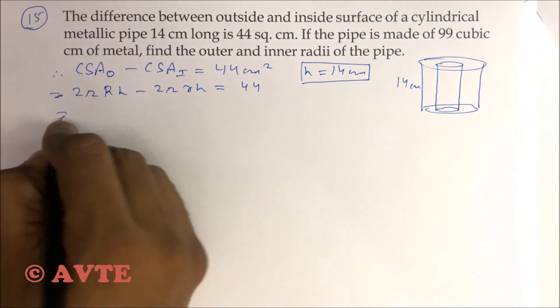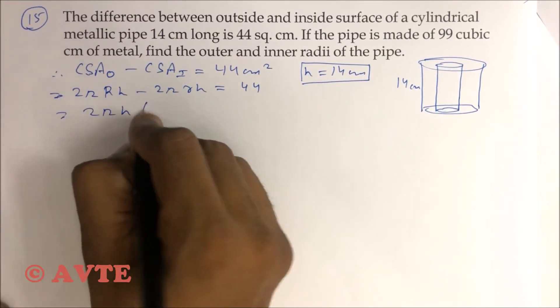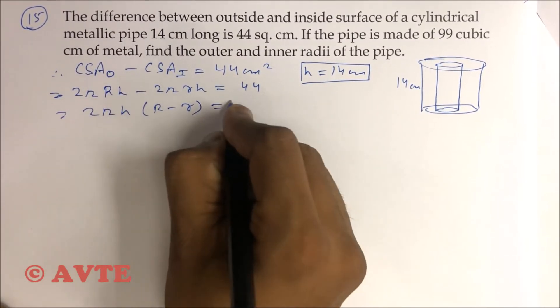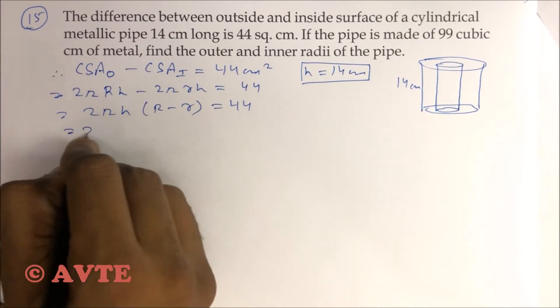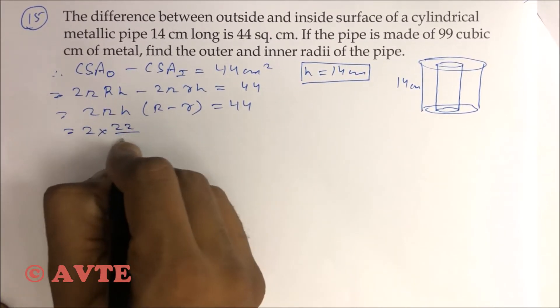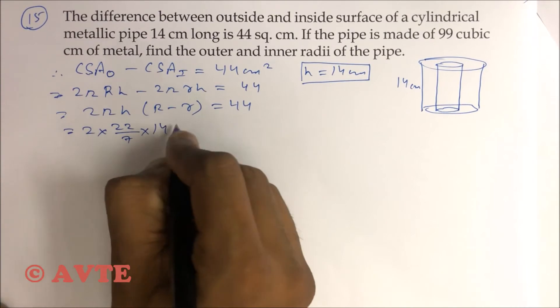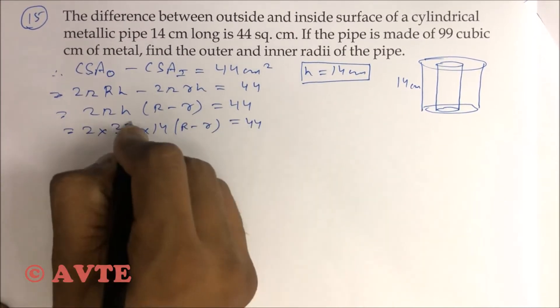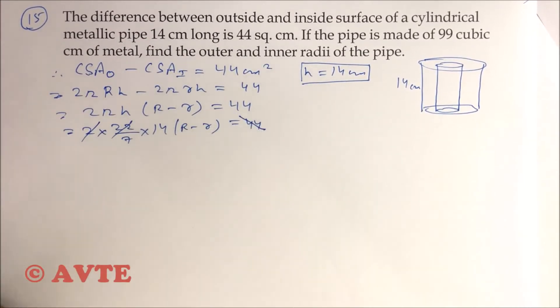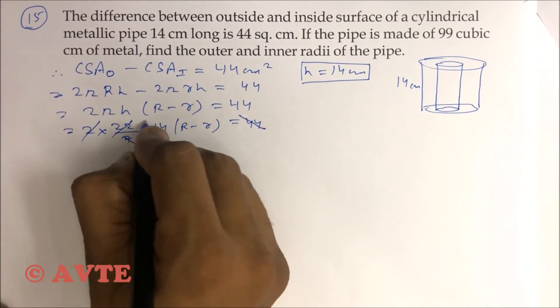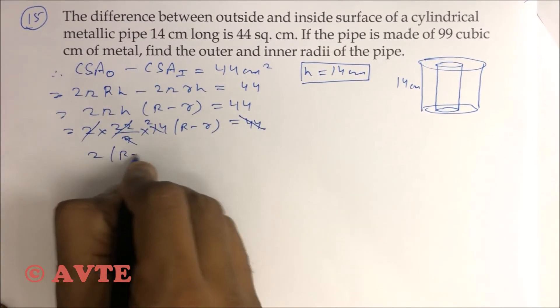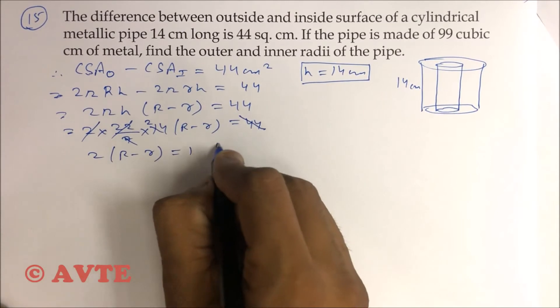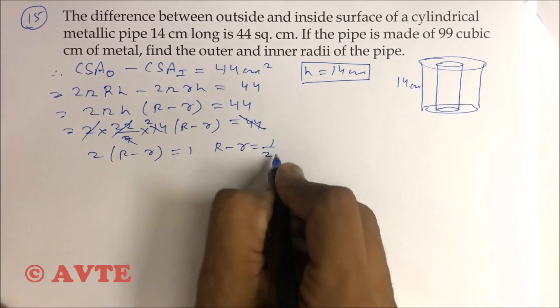Taking 2πh common, R minus r equals 44. That means 2 × 22/7 × 14 × (R - r) = 44. This is 44, this is 44, and this is 2, which means 2(R - r) = 1, so R - r = 1/2.